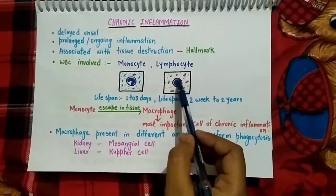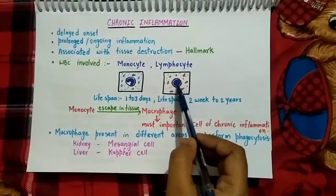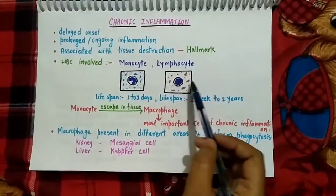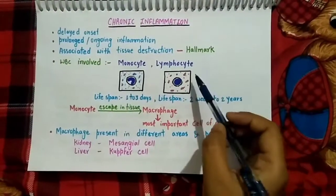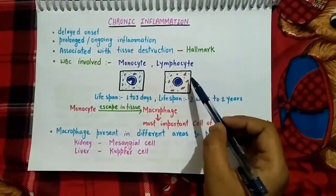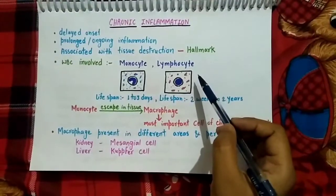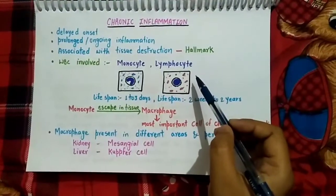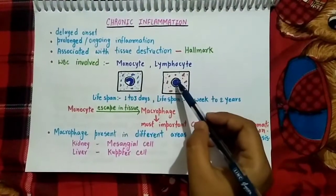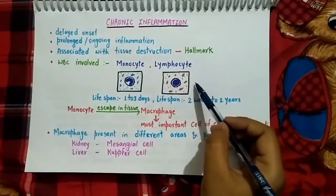In case of monocyte, the nucleus present inside the cell is reniform or kidney-shaped, while in case of lymphocyte, the nucleus is oval or round. Lymphocytes can be either small or large type according to the size of the nucleus present inside the cell.